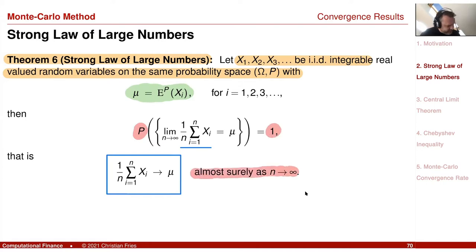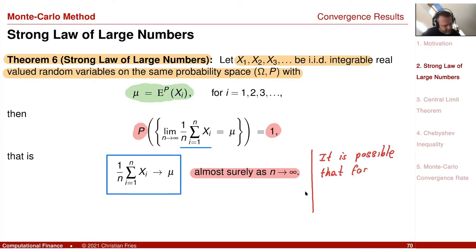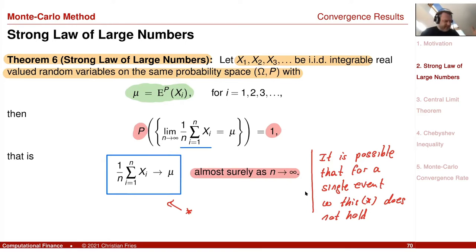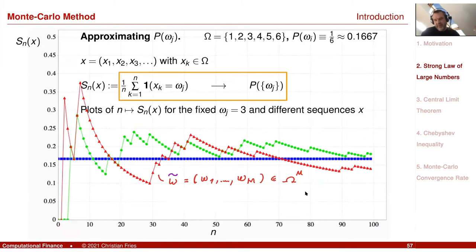The convergence holds almost surely. This appears a bit useless for us because it means it is possible that for a single event — a null set where P(ω₀) equals zero — convergence does not hold. Recall that our drawing is a single event of a sequence of iid random variables, so maybe the path on the picture we had in the previous session does not converge.